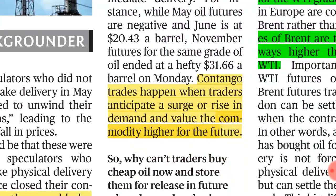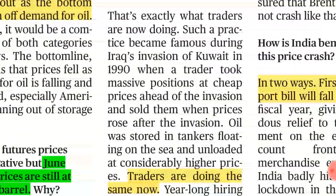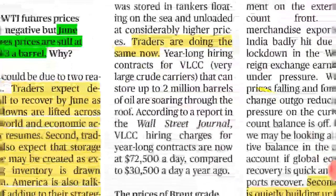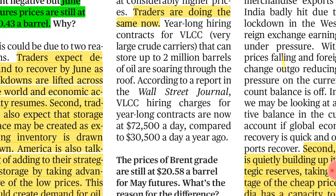Now coming to the concept of contango trading. Contango trading happens when traders anticipate a surge or rise in the demand and value of a commodity in the future. In this situation, traders expect a very low price in May but a high price in June. So contango trades happen — people expecting high prices later start buying and stocking oil now so they can sell it at higher prices. Traders are now hiring VLCCs — Very Large Crude Carriers — which can store up to two million barrels of oil.